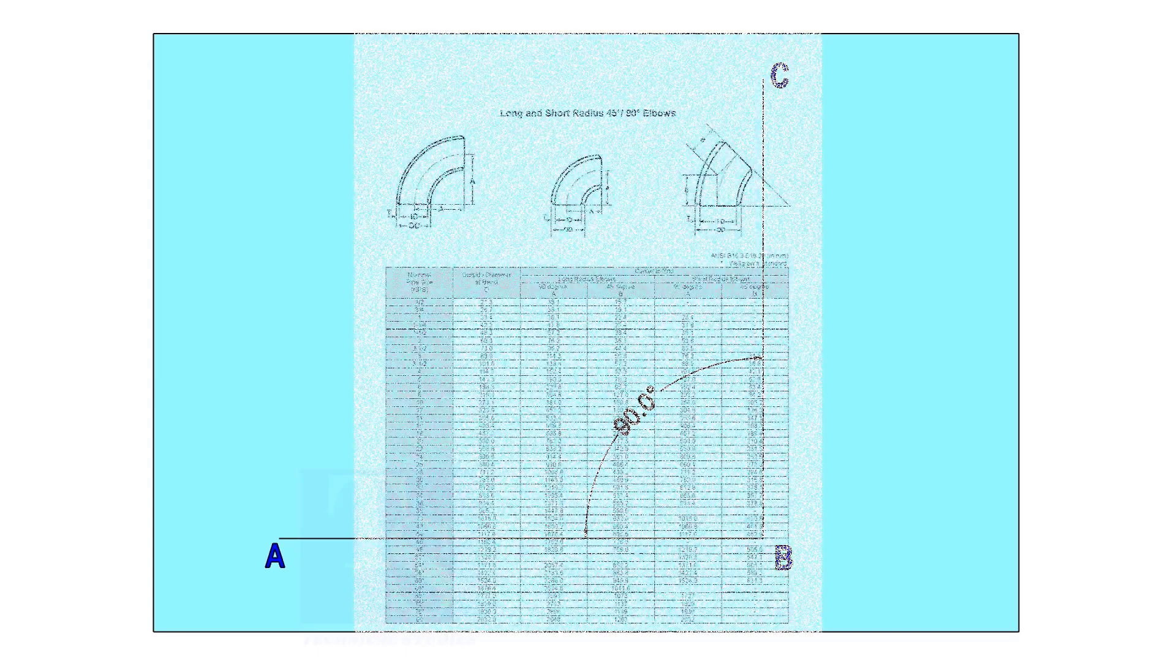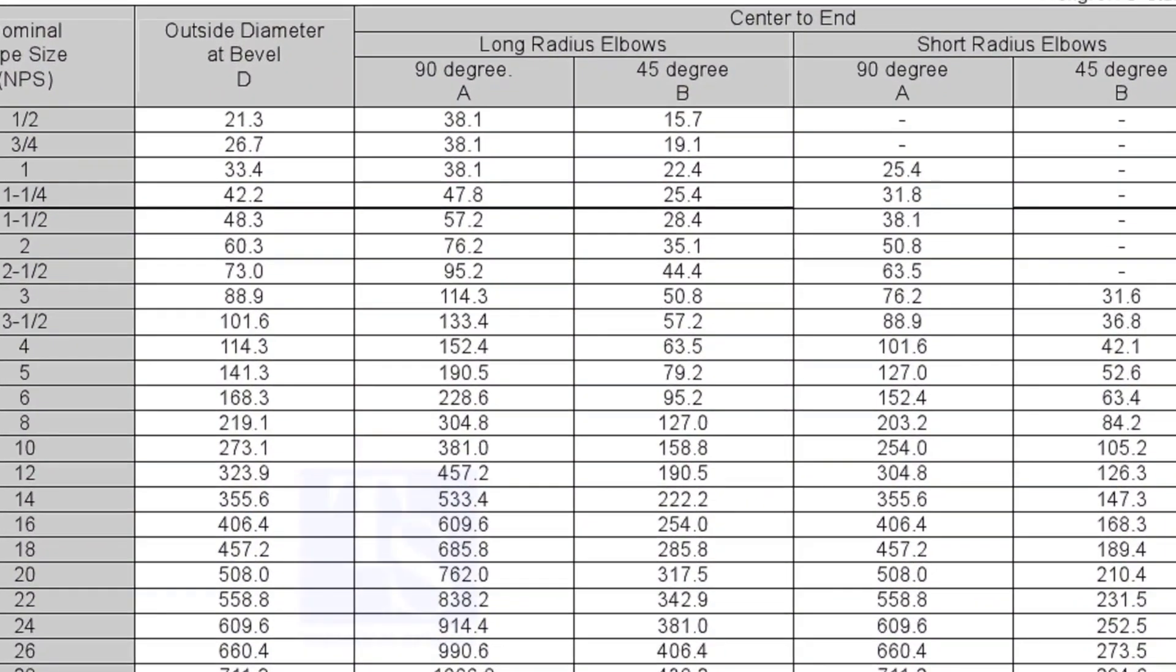Let us mark a 25-degree elbow on a 16-inch large radius elbow. Mark line AB and a perpendicular line BC. Let us check the center radius of 16-inch long radius elbow.